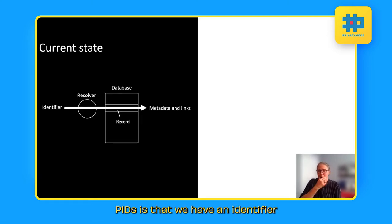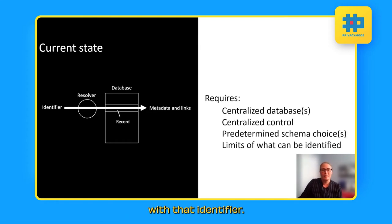Now, the current state of PIDs is that we have an identifier such as ROAR or RAID or DOI. And when you have that identifier, you plug it into a resolver, which then usually searches some kind of database to find a unique record. And from the record, you can then find the metadata and associated links that were originally associated with that identifier. So in this kind of system of current state, what you need is a centralized database, you have centralized control of that. In the majority of persistent identifiers, there's a predetermined schema choice. And there's really limits about what can be identified.